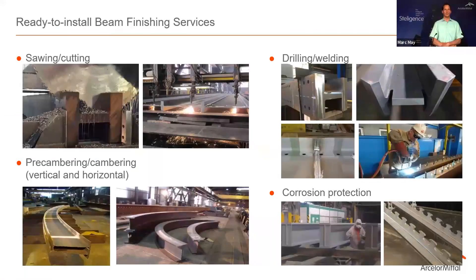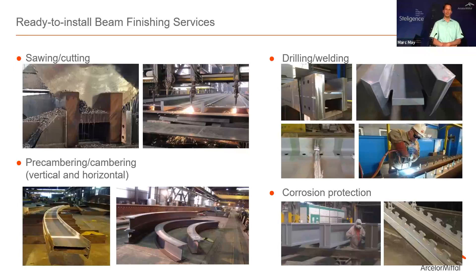We also offer finishing services to our customers: operations like sawing or cutting, precambering or cambering about both axes, drilling, welding, and weld preparation, as well as corrosion protection. A typical example is a bridge where we can supply beams ready to install at the job site. For car parks, steel fabricators often don't have the capability to handle S460 girders of 60-meter lengths, so we supply only those beams while the remaining steel structure is done by the steel fabricator, who is later also responsible for erection.